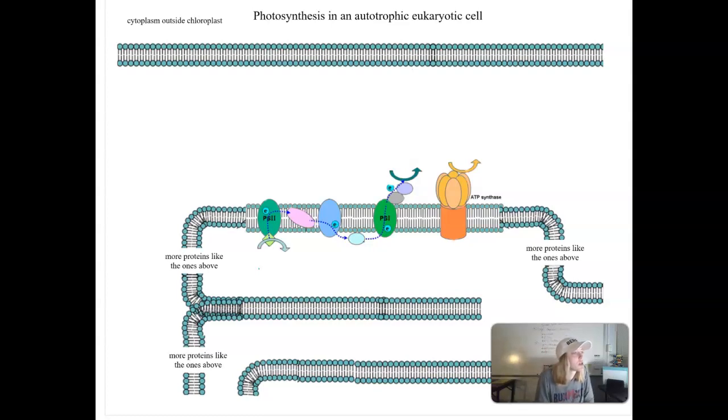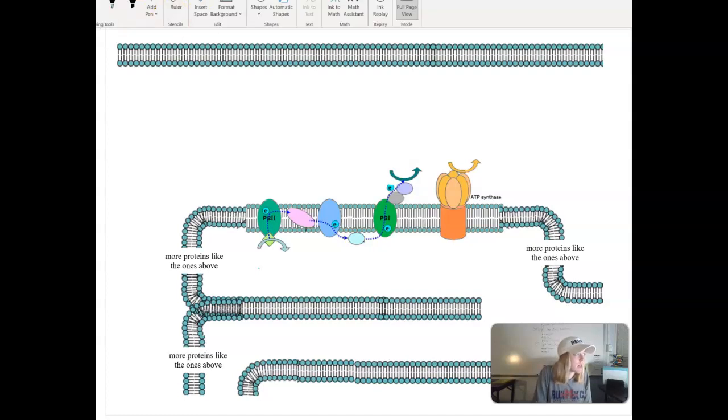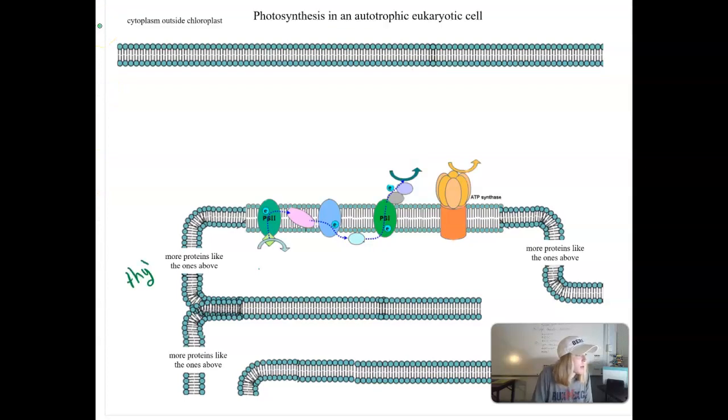Looking at our poster, this entire thing is supposed to be the inside of a chloroplast. This top phospholipid bilayer represents the outer membrane of the chloroplast and then as we move inwards these are the internal structures. We see that there are these thylakoids here, so these bottom membranes represent the thylakoids. We can tell that because this is where the chlorophyll can be found. These are individual thylakoids and a stack of them would be called a granum.